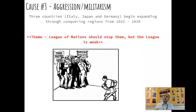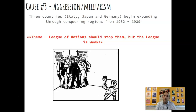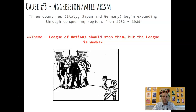Cause number three — the big one — is aggression and militarism. Between 1932 and 1939, when World War II starts, Italy, Japan, and Germany are going to expand their countries by conquering new regions. This should be stopped by other powers. The League of Nations, created after World War I, is supposed to stop aggression. But the League of Nations is going to be very, very weak — when they should be stepping up, they cower and step back to avoid a future war, allowing things to happen to avoid conflict.